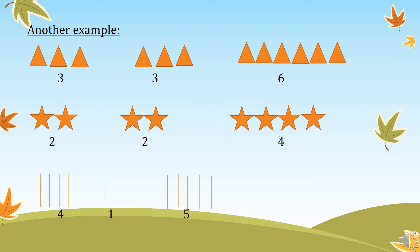Here we have another example. We have two groups of triangles. The first group contains three triangles and the second group also contains three triangles. The sum of the first and the second group is one, two, three, four, five, six.